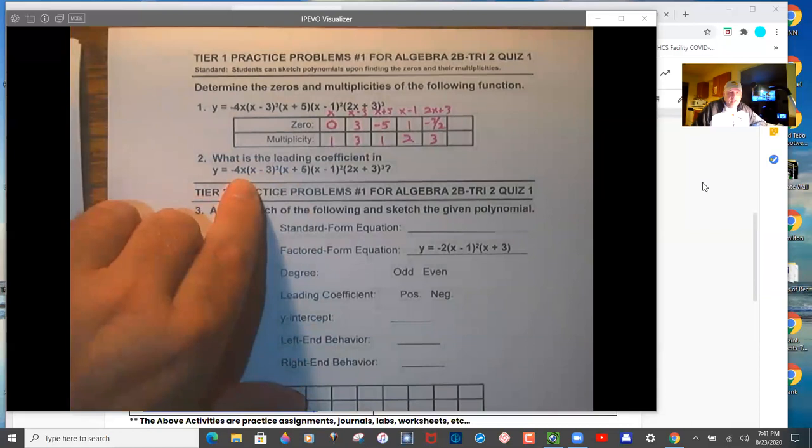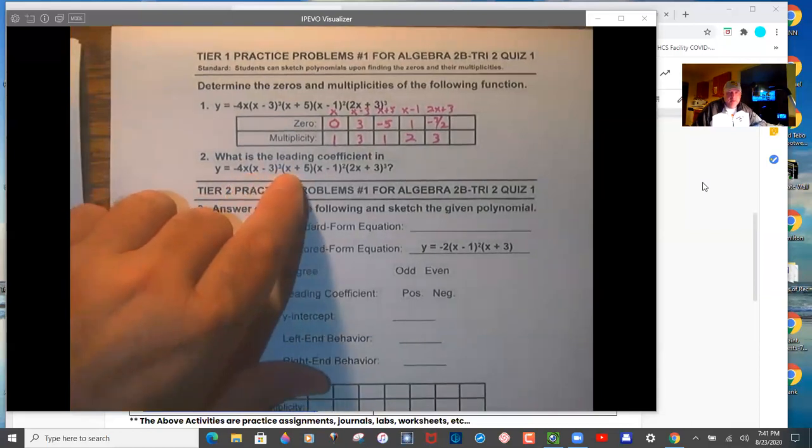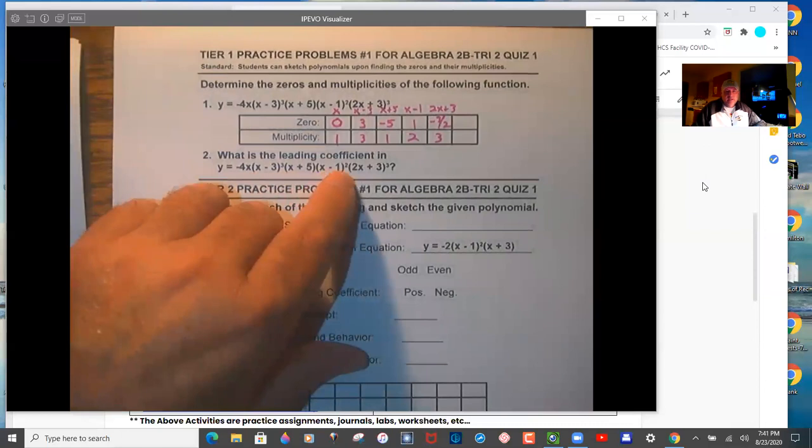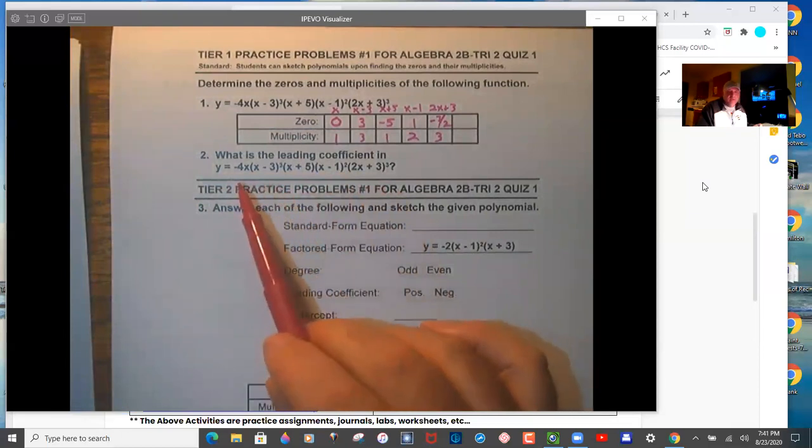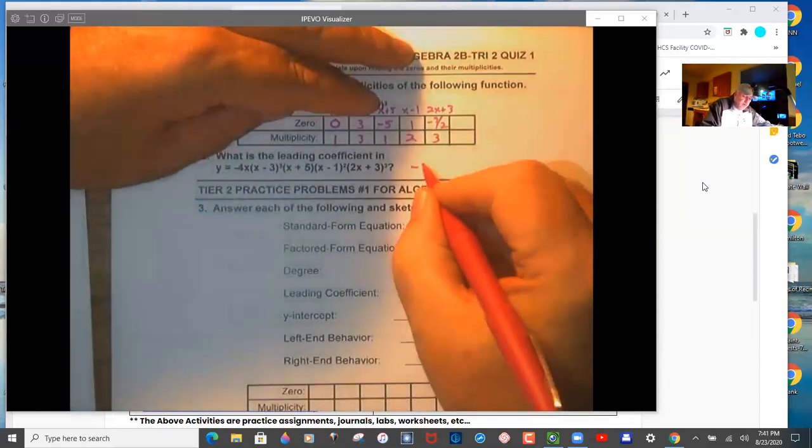So leading coefficient here, negative four times one to the third times one times one squared times two to the third. So two to the third is eight, the rest are ones, and then eight times that negative four in front is negative 32.